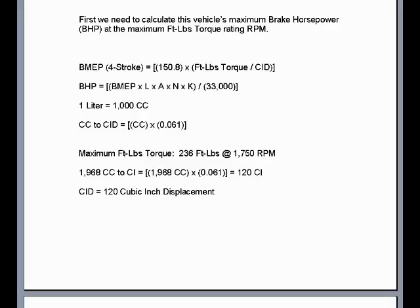First, we're going to calculate the vehicle's maximum brake horsepower based off the maximum foot-pounds torque rating and RPM. We start with the brake mean effective pressure in PSI formula for the four-stroke piston engine, which is foot-pounds torque divided by cubic inch displacement times 150.8. We first have to convert the 1,968 cc's, or 1.968-liter engine. Its exact displacement is 1.968 liters, which when multiplied by 0.061 translates to 120 cubic inches of displacement.